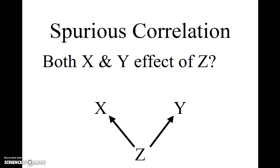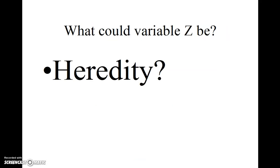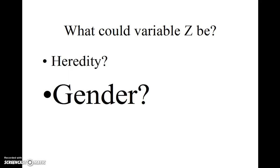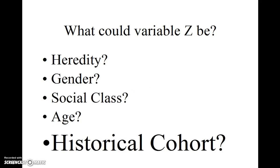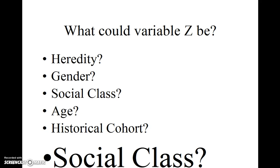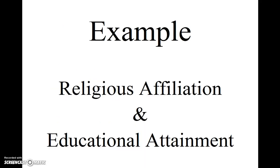We have a name for that situation too: a spurious correlation. What could variable z be? In my experience, there are many possible candidates: some underlying hereditary factor, gender, age, historical cohort, or social class.